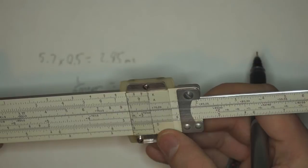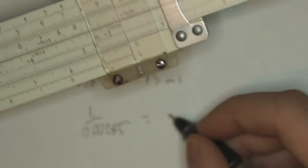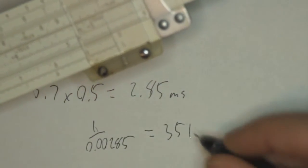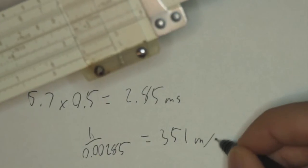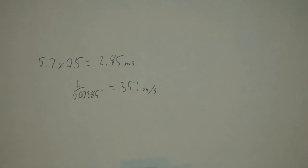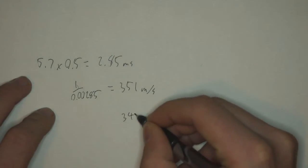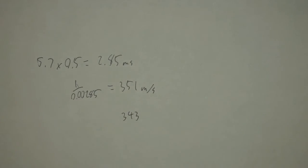So that's 351 meters per second, which is a little quick. The number I was looking for was actually 343, which is the number you'd be using in high school labs.